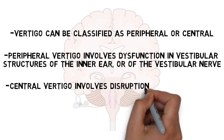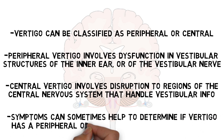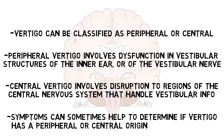Central vertigo involves disruption to regions of the central nervous system that handle vestibular information. The symptoms a patient is experiencing can help to determine if vertigo has a peripheral or central origin. For example, peripheral vertigo is more likely to result in short-lived episodes with more severe nausea and vomiting, while central vertigo may cause longer episodes that involve other neurological symptoms, but of course these commonalities may not hold true in every case.